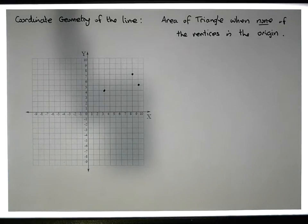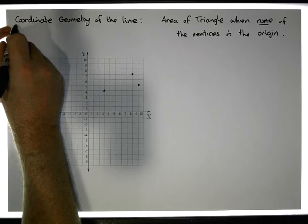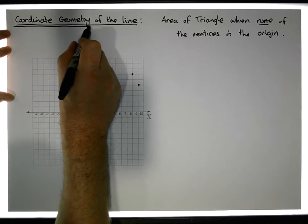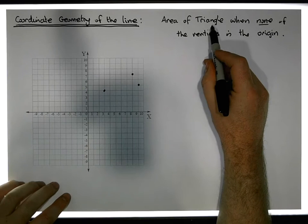Hi guys, this is Jonathan Lambert with the Mathematics Development and Support Service at the National College of Ireland. This short video, another in our series on coordinate geometry of the line, is going to present how to calculate the area of a triangle when you've been provided three vertices and none of the vertices is the origin.